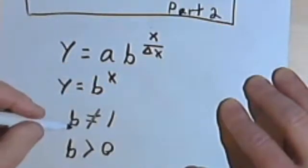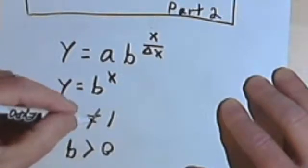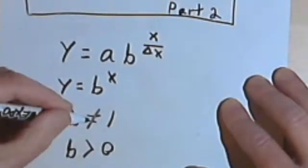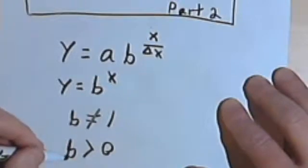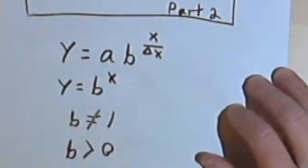So my restrictions on b are that b has to not equal 1 and it has to be greater than zero. So let's look at an example.